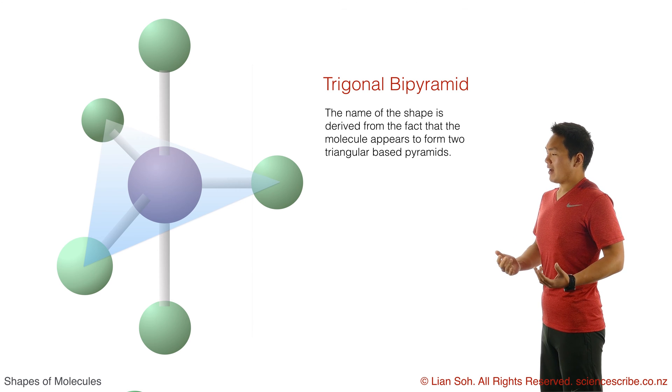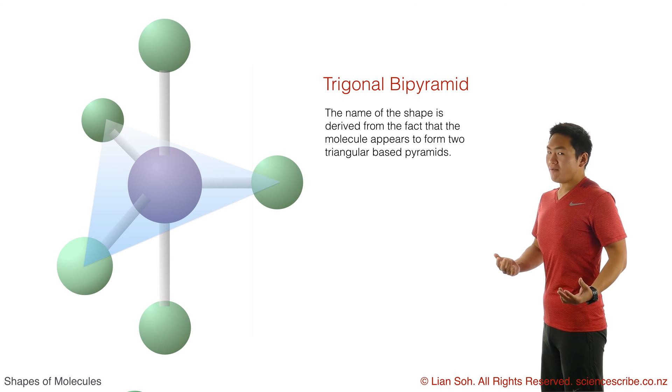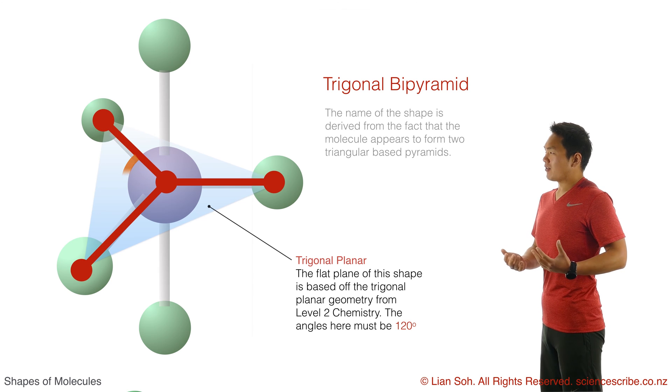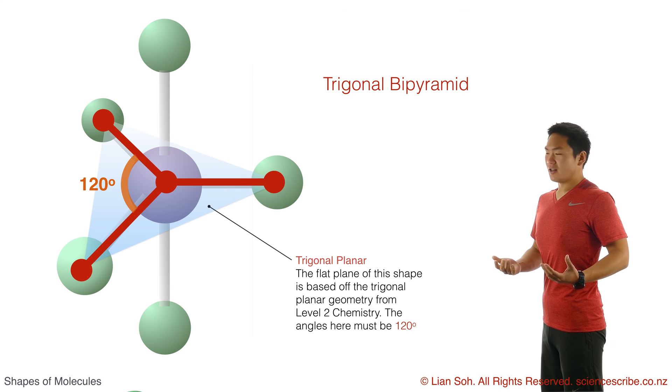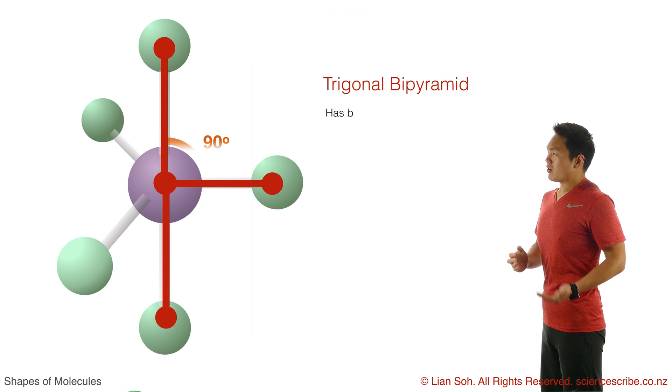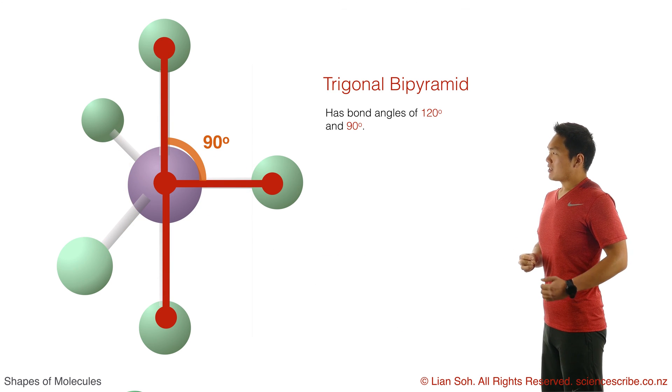Now if you were to work out the angles for these, it's probably pretty obvious that in the flat plane where this triangle is, it's bound to be 120 degrees because you've got three things spread out as far as you can. And then that means that across the vertical part of this shape, you're left with 90 degrees.